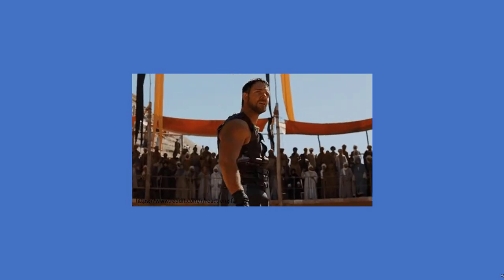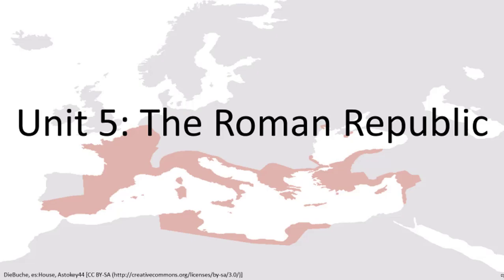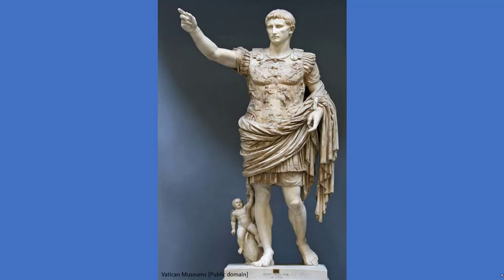Recall that at the end of Unit 5's lesson on the Roman Republic, Octavian, Julius Caesar's grand-nephew and adopted heir, defeated Mark Antony and Cleopatra in battle to become the sole ruler of the Roman world. In 27 BCE, the Senate granted Octavian the title Augustus, and he effectively became the first Roman emperor. The next few decades, known as the Augustan Age, would see an important pattern that would mark the political development of the Roman Empire.